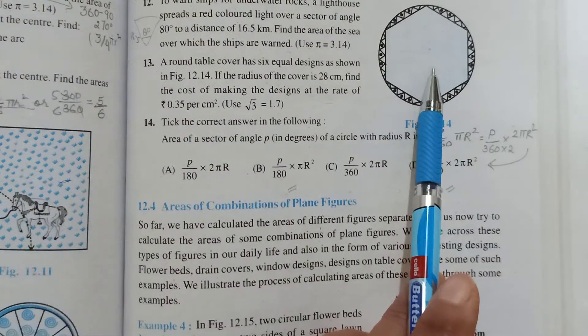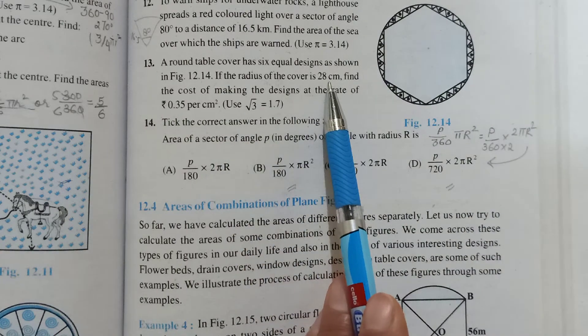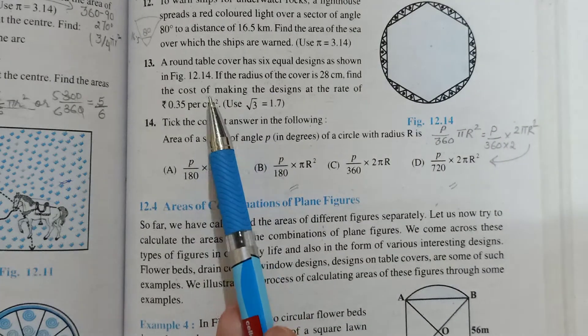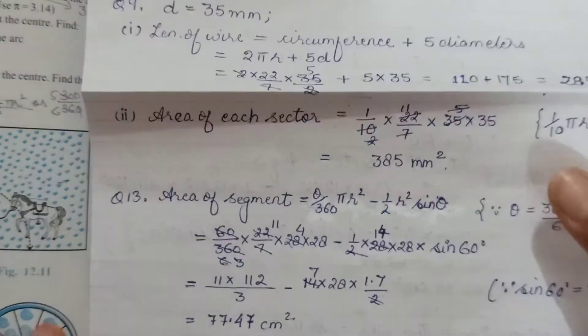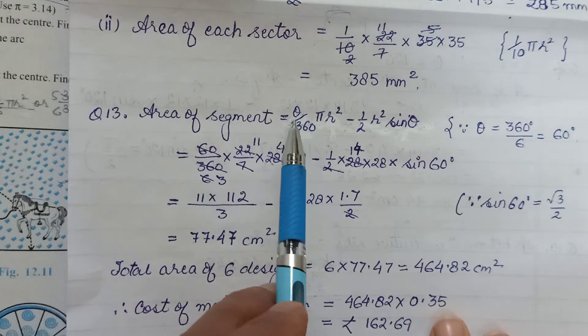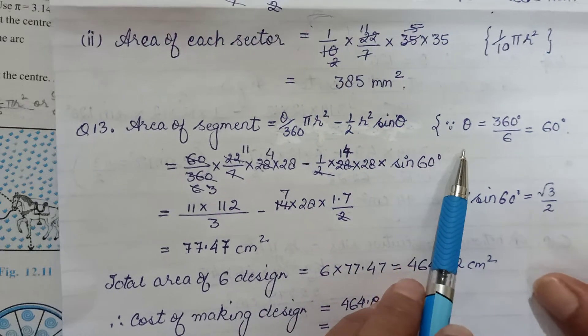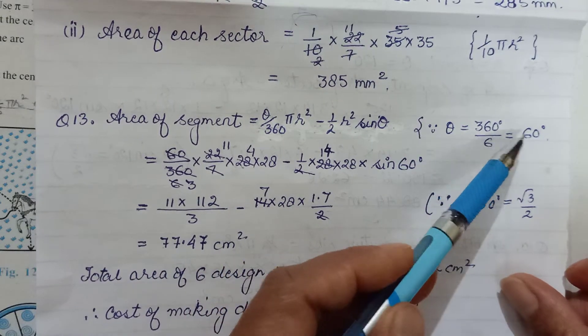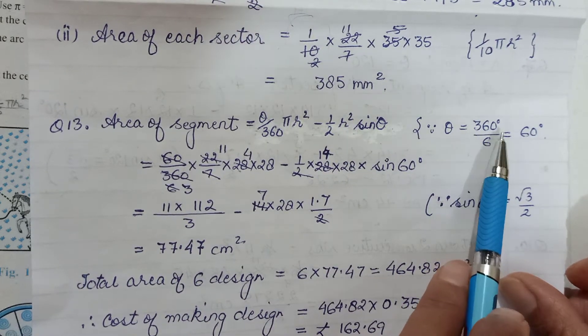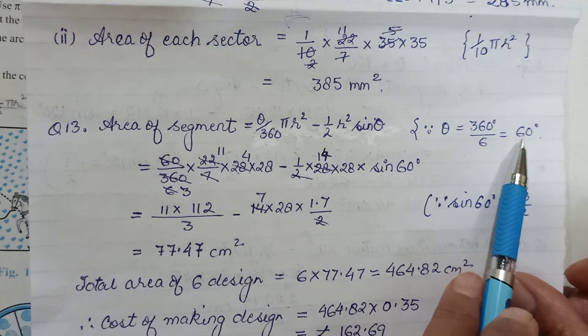Problem 13: A round table shown here has six equal designs. The design is made in a segment form. Radius is given as 28, find the cost of making the design at rate of ₹0.35 per cm². First we need to find area in cm², then multiply by the rate. Area of segment we will have to find - design was in the form of a segment. Area of one segment is (θ/360)πr² - ½r²sin θ. The circle has been divided into six equal paths, so angle of each sector would be 360/6 = 60°.